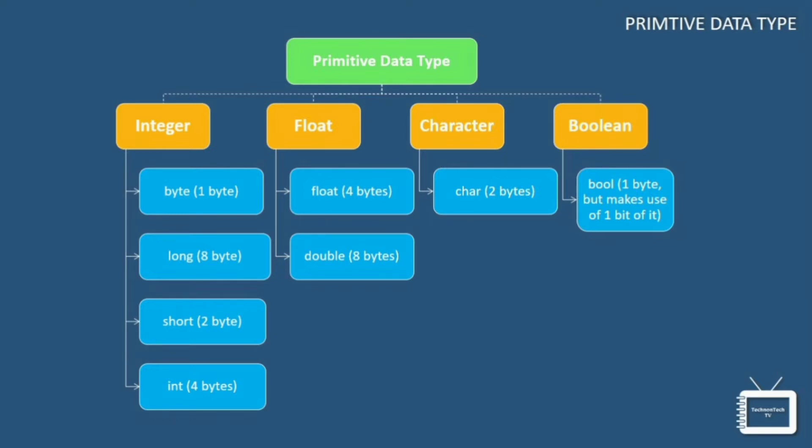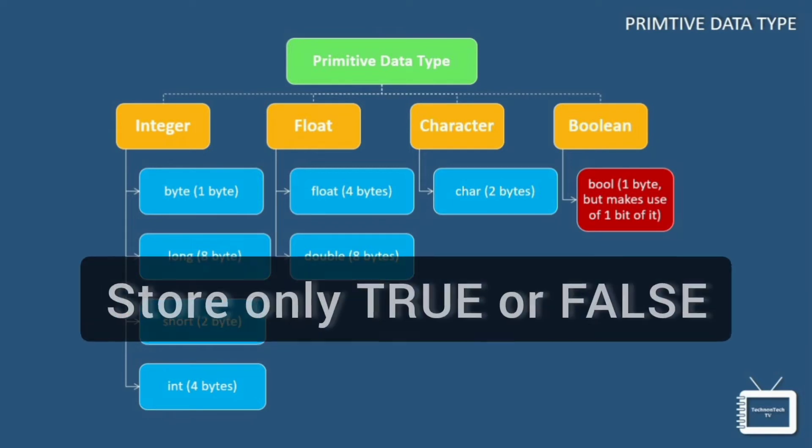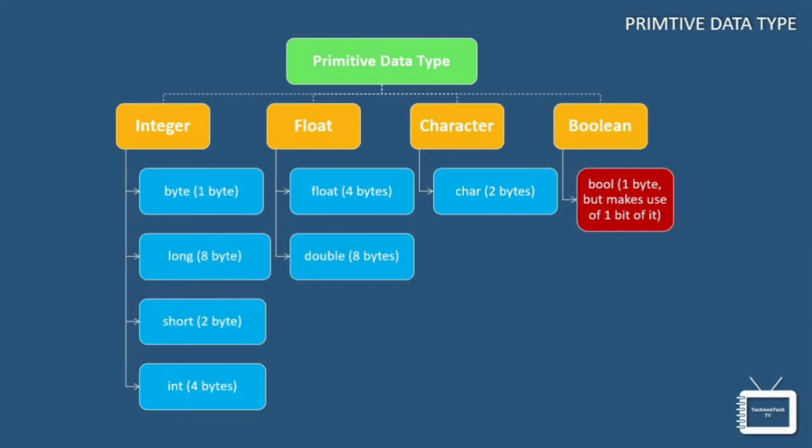Now let's understand each of these data types in depth. First, I will tell you what is a boolean data type. Boolean data type comprises of a bit of information and can store only true or false values. This data type is used to track true/false conditions.